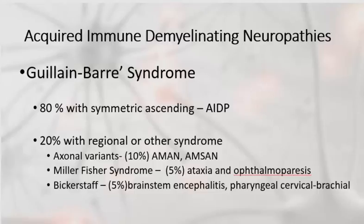That only represents 80% of AIDP. About 20% are abnormal or unusual. Some of them have axonal variants, so they're obviously not demyelinating, and those include AMAN — acute motor axonal neuropathy — and AMSAN, acute motor sensory axonal neuropathy.